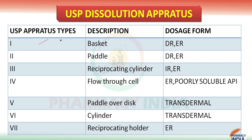The Basket (USP Apparatus 1) is used for delayed release and extended release dosage forms. The second one is the Paddle, which is used for delayed release and extended release. The third one is the Reciprocating Cylinder.